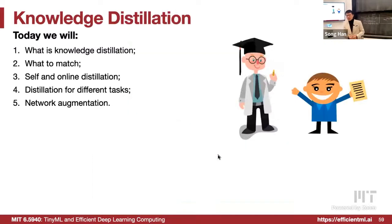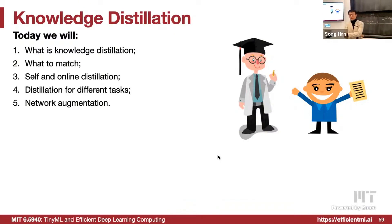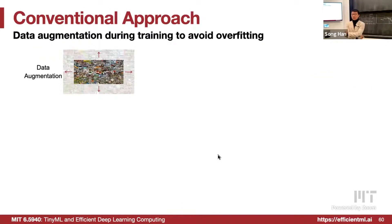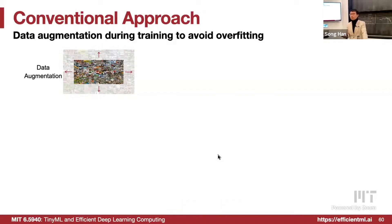Let's talk about network augmentation — another technique very related to this topic. We try to improve the accuracy and quality of a small model. That's the central topic of this part of the lecture: how do we improve the accuracy of a small model?